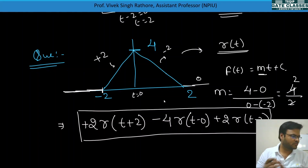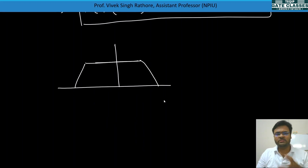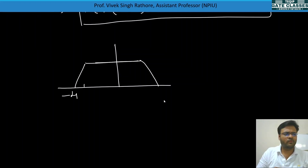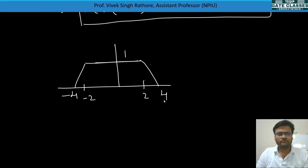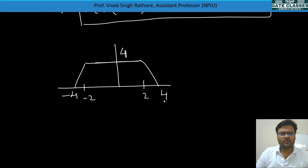So the triangular pulse is: 2·r(t + 2) − 4·r(t) + 2·r(t − 2). Verify: +2 − 4 + 2 = 0, confirming it is a finite-duration signal.